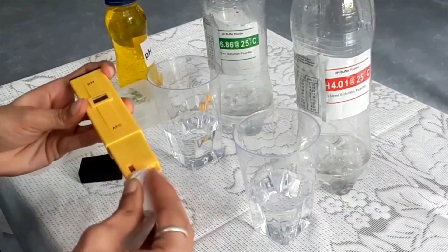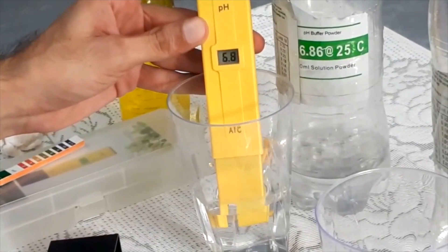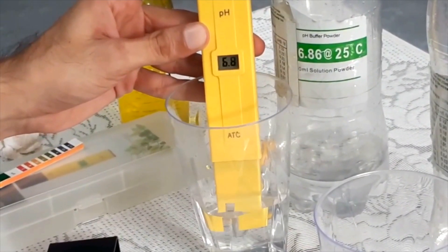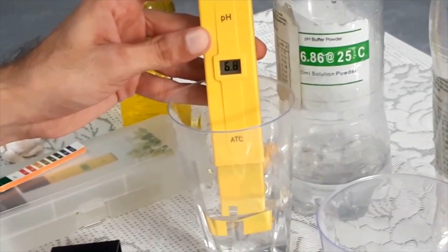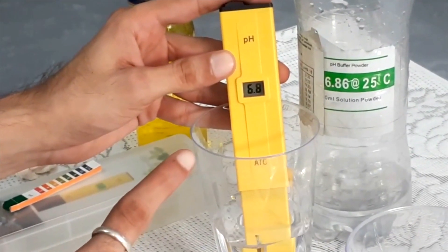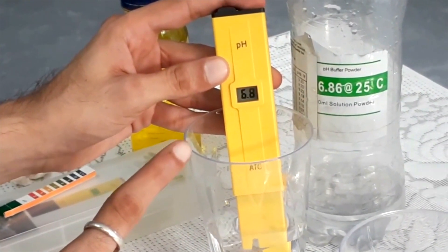Let's check 6.86 as well. The reading is correct and that is how you calibrate a pH meter.